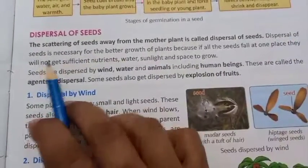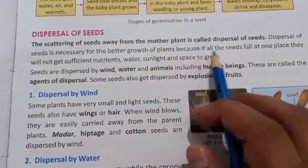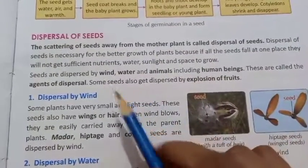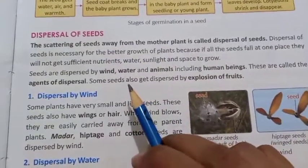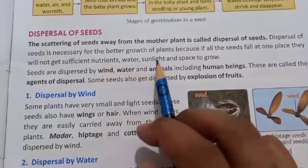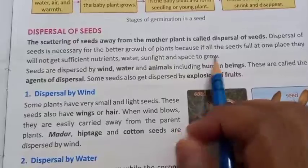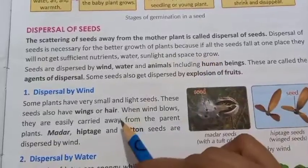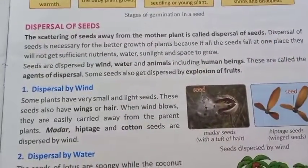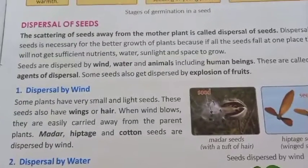Dispersal of seeds is necessary for the better growth of plants because if all the seeds fall at one place, they will not get sufficient nutrients, water, sunlight, and space to grow. If seeds are sown very close to each other, they will struggle for space, light, air, water, and nutrients.